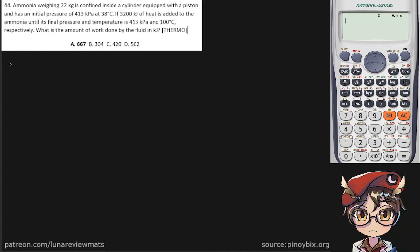Ammonia weighing 22 kilograms is confined inside a cylinder equipped with a piston and has an initial pressure of 413 kPa at a temperature of 38 degrees C or 311 kelvin. If 3200 kilojoules of heat is added to the ammonia until its final pressure and temperature is 413 kPa,